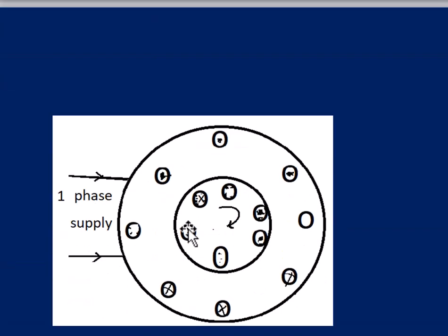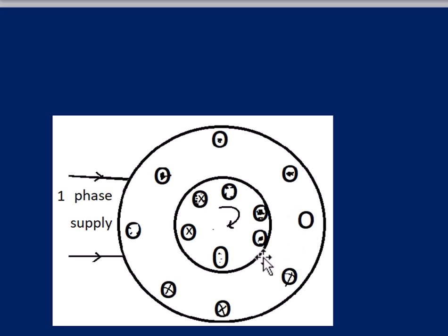Suppose the motor is started using one of the starting methods — that may be a split phase method, or an auxiliary winding connected in series with a capacitor across the main winding, or two capacitors in parallel connected in series with the auxiliary winding across the main winding, which is connected to the single phase AC supply. These are all methods of starting the single phase induction motor. By using any one of them, a resultant torque will be present.